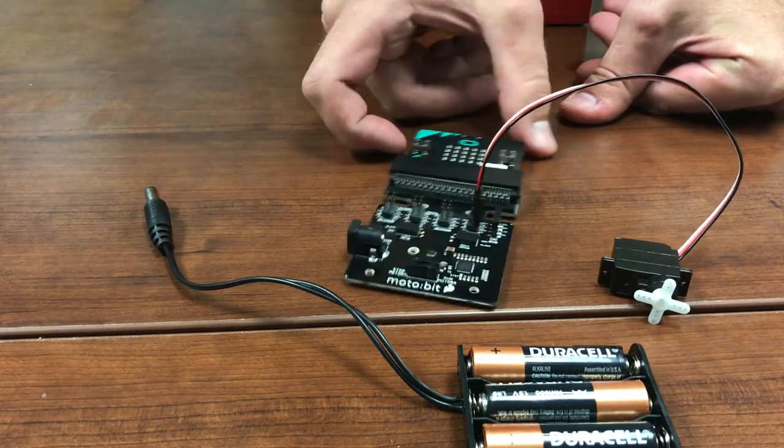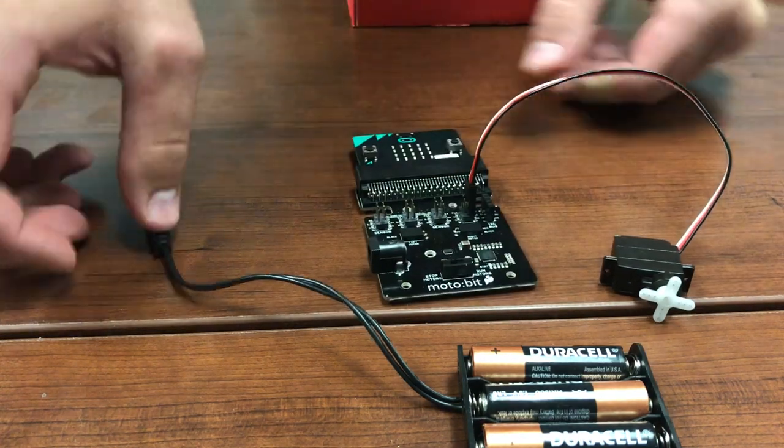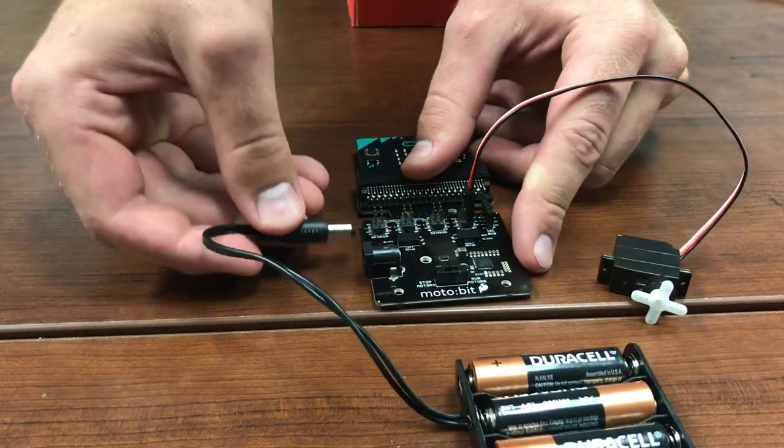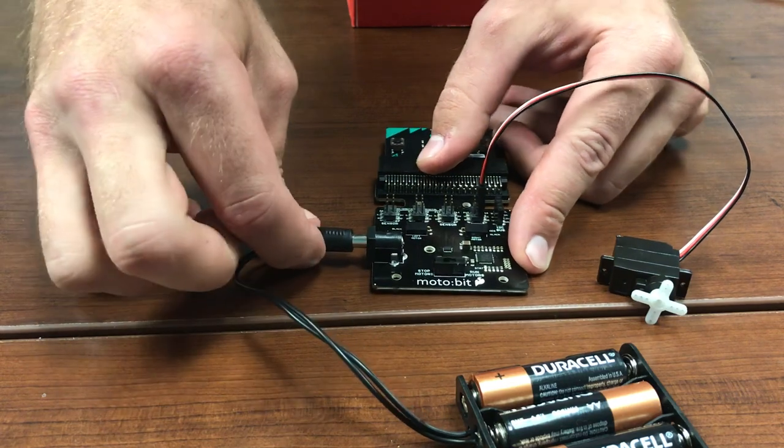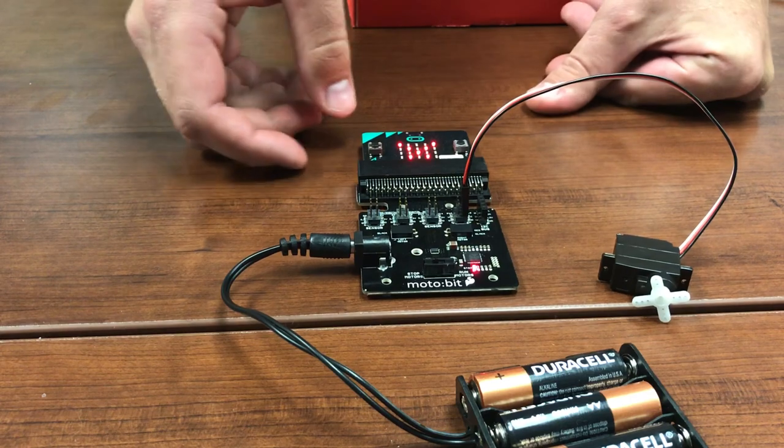We then plug in a microbit preloaded with the beginner lockbox code and plug in the power supply. The servo motor will not work without the external power supply. You cannot power it through the USB port that you use to flash the microbit.